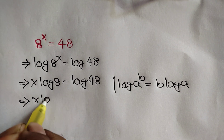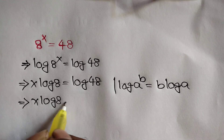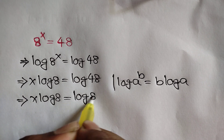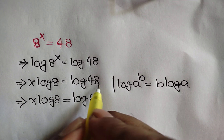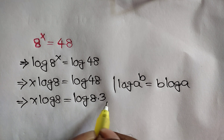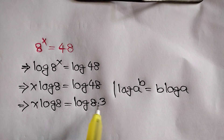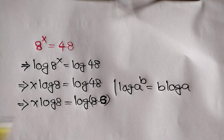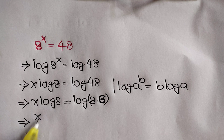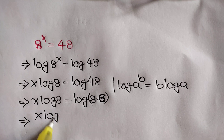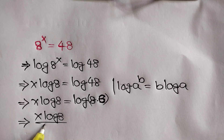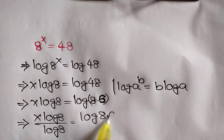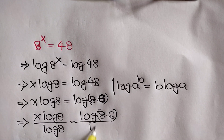x log of 8 is equal to log of 48, which can be written as 8 times 6. Dividing both sides by log of 8, we can write x log of 8 over log of 8 is equal to log of 8 times 6 over log of 8.